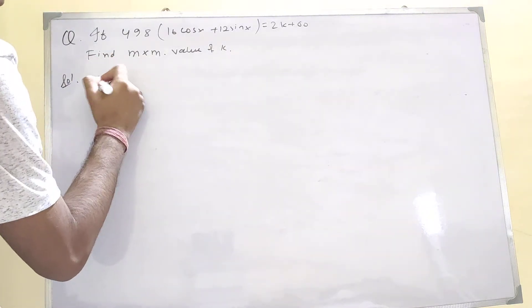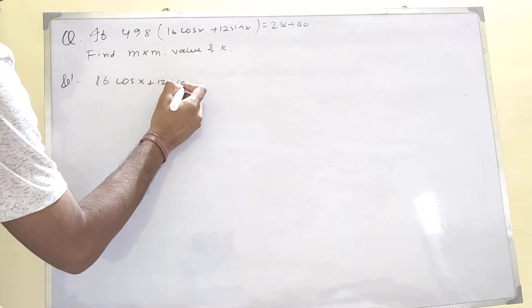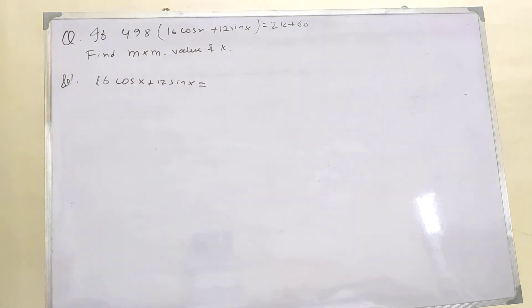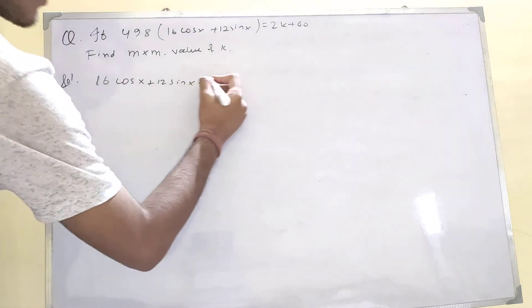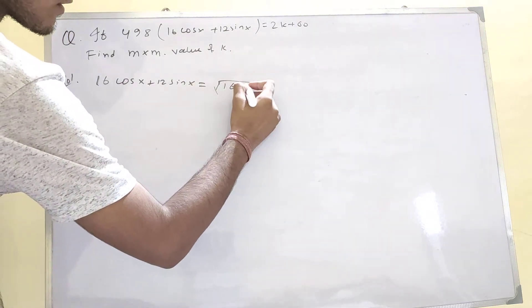We can write 16 cos x plus 12 sin x as the square root of 16 squared plus...